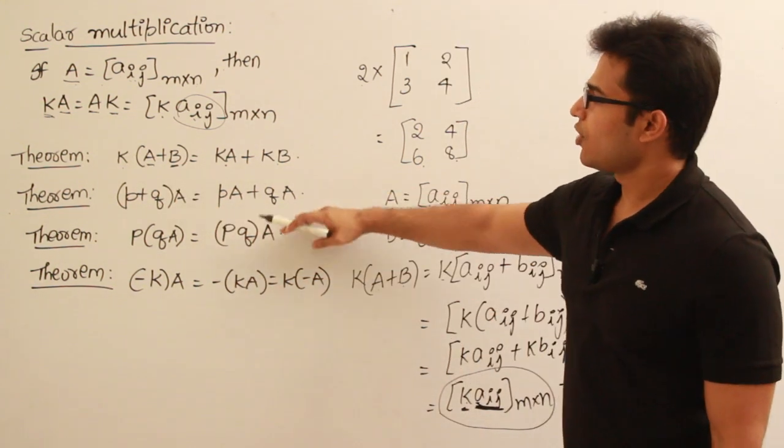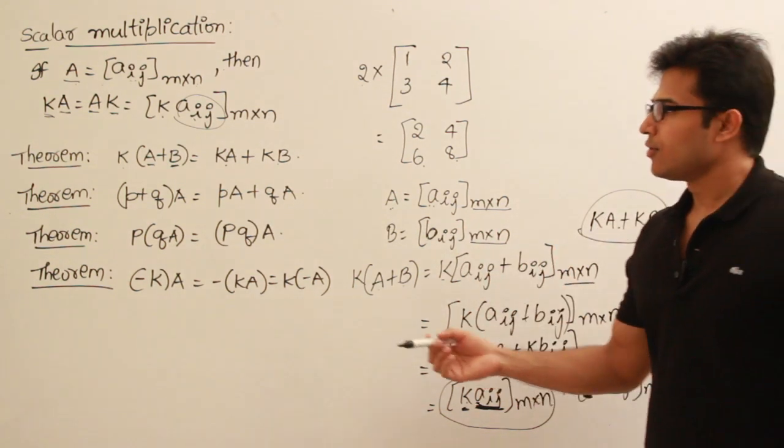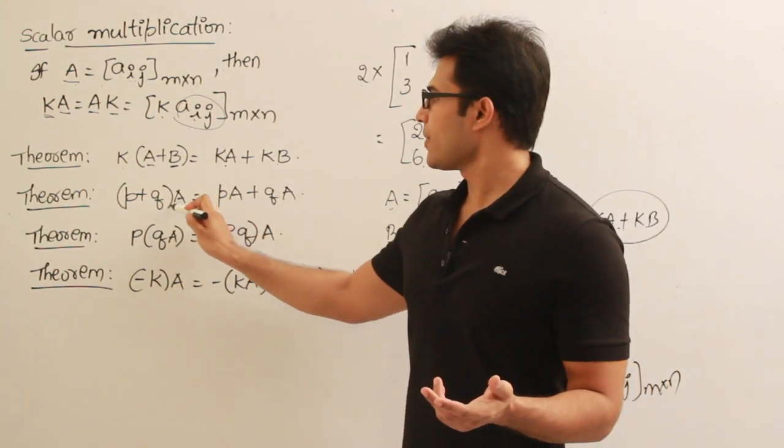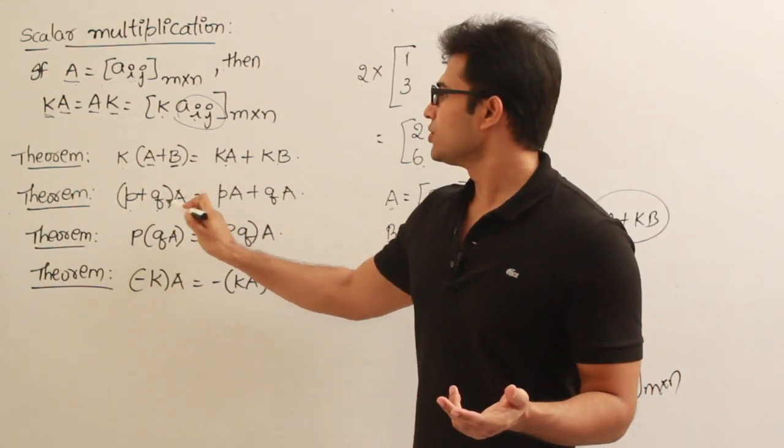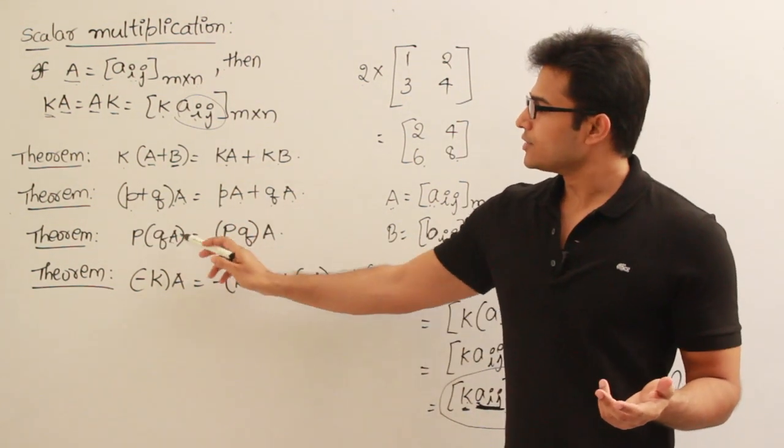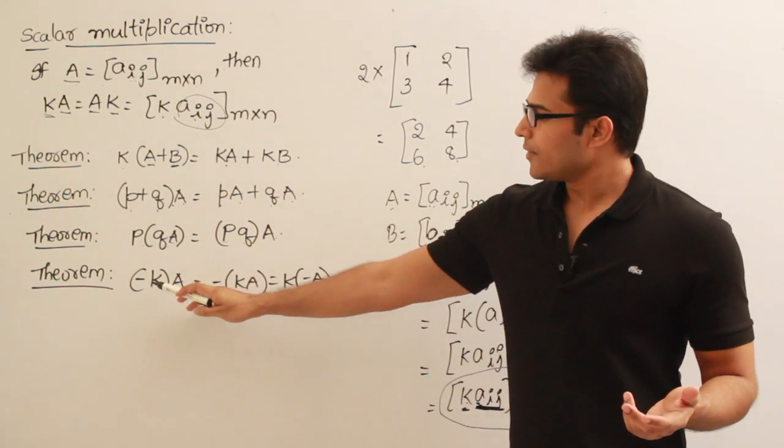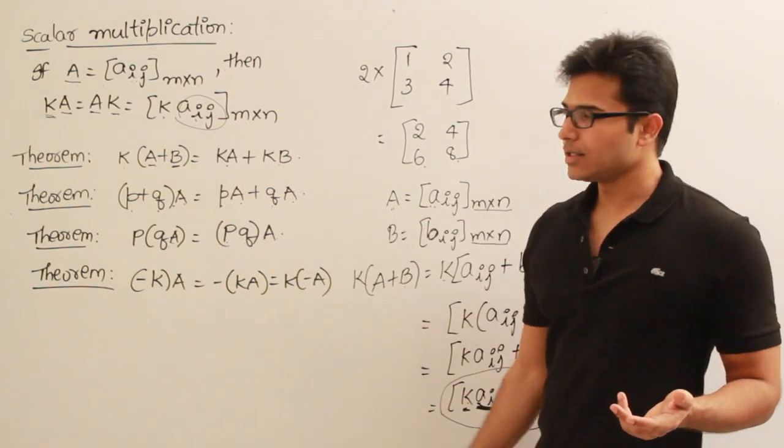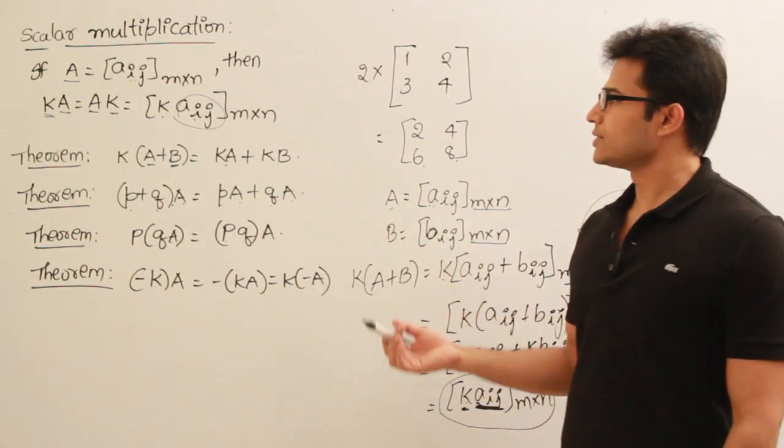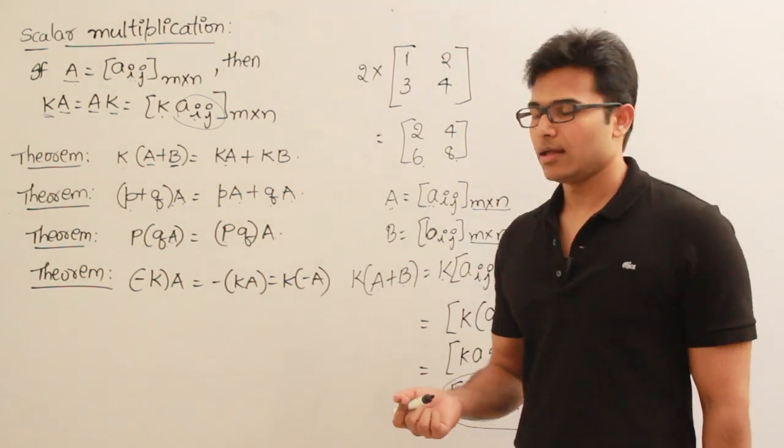Similarly we can prove all of them using the same arguments. Now, (P+Q)A, where P and Q are two scalars and A is a matrix, then (P+Q)A equals PA plus QA. Similarly we can do the same here. P(QA) equals (PQ)A. Then minus one. Everything is the same. You can prove them anyway. So these are some of the results and theorems which are in scalar multiplication.